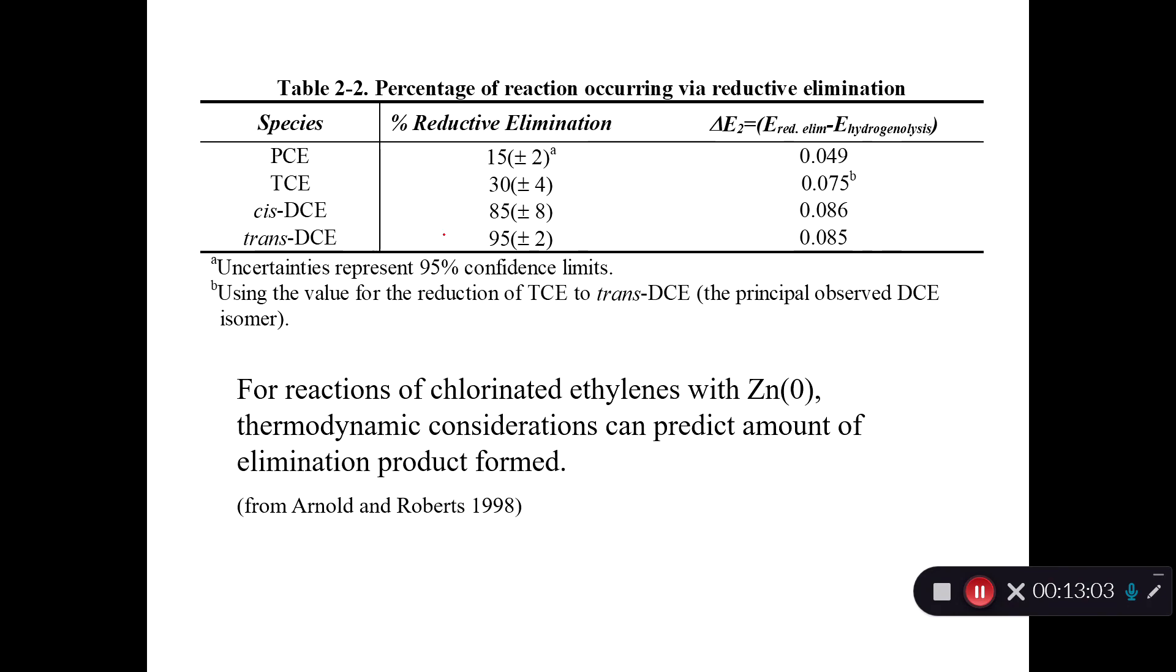My buddy, Bill Arnold, did some work on this in his dissertation, and he looked at the percent of the reaction that goes via reductive elimination. This is for reactions with zinc, an abiotic reaction. The percent that goes via reductive elimination is plotted versus its redox potential. As the redox potential for elimination gets more favorable, this is the difference between the two. So as the elimination becomes more favorable, more and more of the product is going to go via the elimination pathway. Again, with an abiotic reactant. When bacteria are involved, bacteria just don't seem to be able to do this.